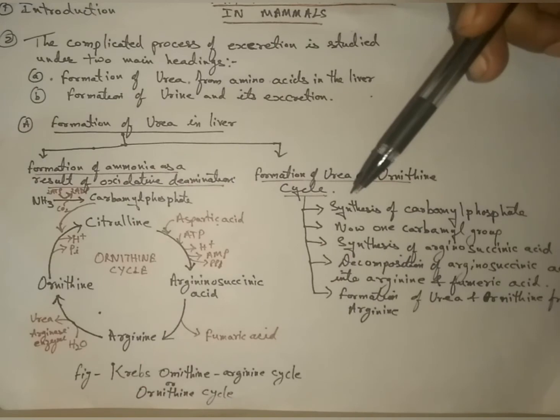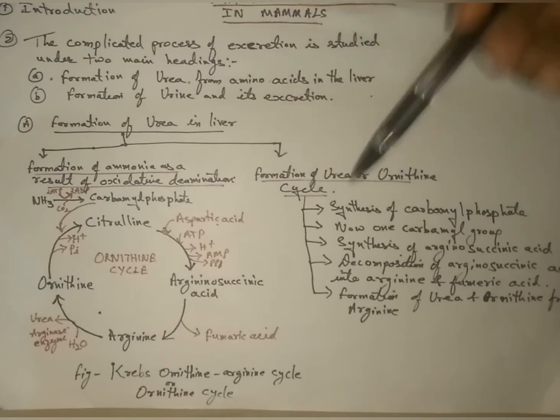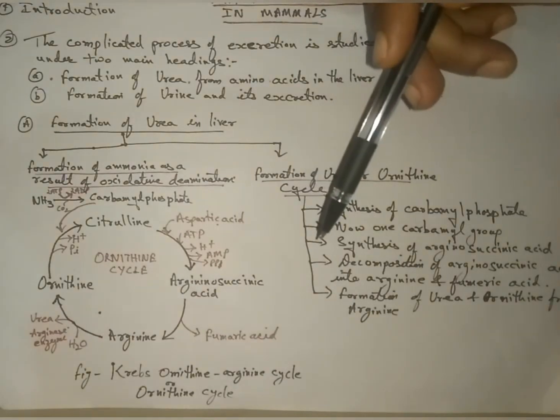Formation of urea from ammonia is called ornithine cycle, arginine cycle, or urea cycle, or Krebs-Henseleit cycle. The ornithine cycle can be studied in the following steps. First, synthesis of carbamoyl phosphate.